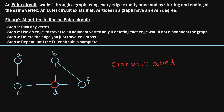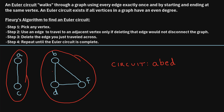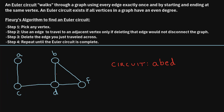Now at vertex D, we have a few choices: we could travel to vertex B, F, or C. However, if we travel from vertex D to vertex C and delete this edge, that would produce a disconnected graph — there's no way to go from some vertices to the others. So we cannot go from vertex D to vertex C as our next step. Instead, let's choose B. If we travel to B from D and delete this edge, we still have a connected graph. So we'll add B as the next step in our Euler circuit.